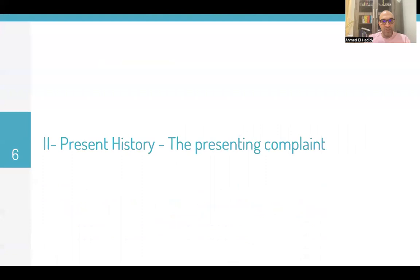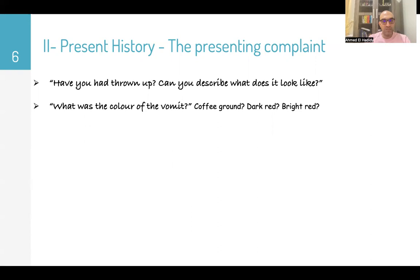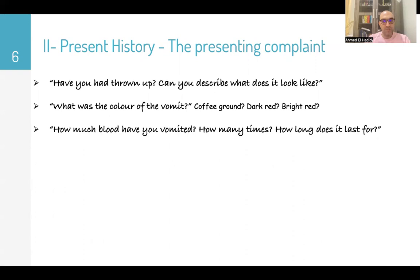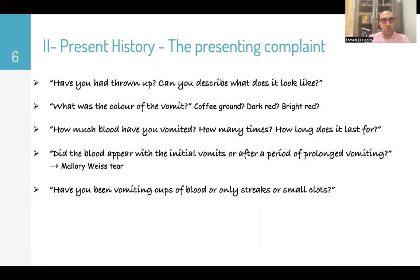Then go to dialogue, starting with the presenting complaint. 'Have you thrown up? Can you describe what it looks like? What was the color of the vomit — is it coffee ground, dark red, or bright red? How much blood have you vomited? How many times, and how long has it lasted?' Also ask whether the blood appeared with the initial vomits or after a period of prolonged vomiting, as in Mallory-Weiss tear. Were you vomiting cups of blood or only streaks or small clots?